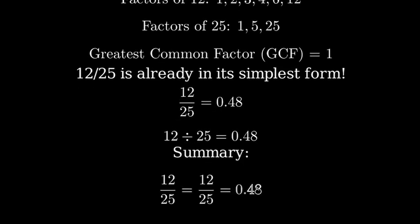To summarize, we found that 12/25 cannot be simplified further because the greatest common factor of 12 and 25 is 1. Therefore, 12/25 equals 12/25, which is equal to 0.48.